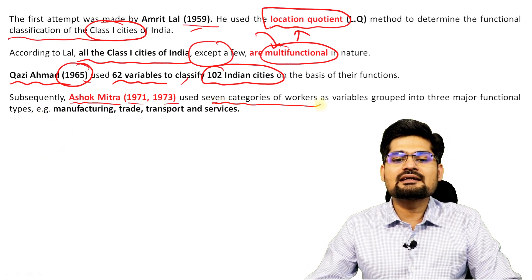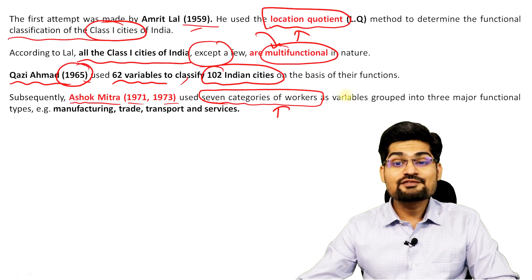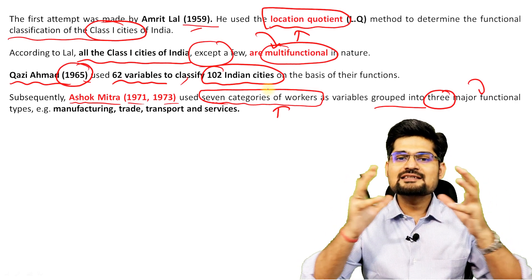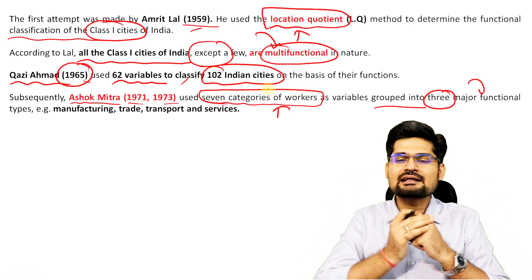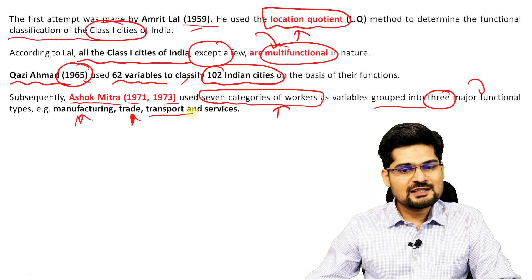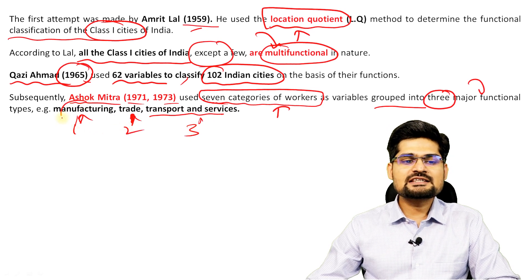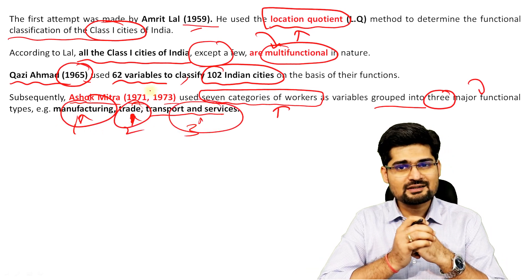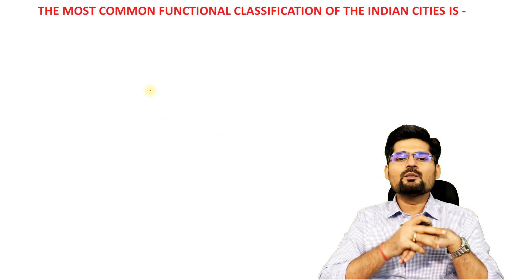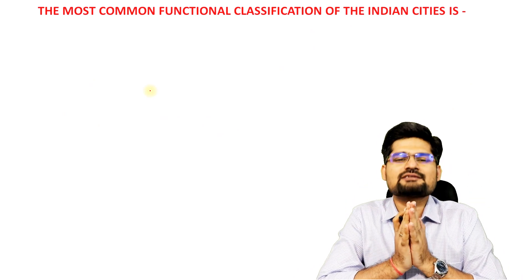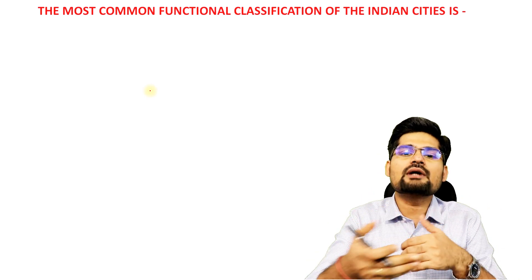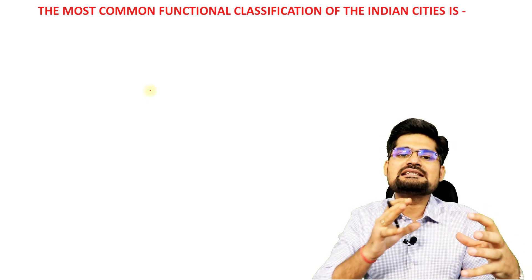Ashok Mitra's classification used seven categories of workers as variables, grouped into three major functional types: manufacturing, trade and transport, and services. Before going into Ashok Mitra's specific classification, let's look at the general classification of Indian towns and cities, which has ten categories.